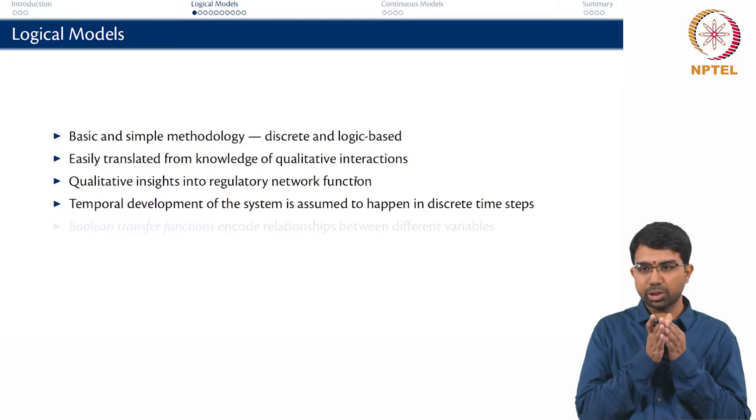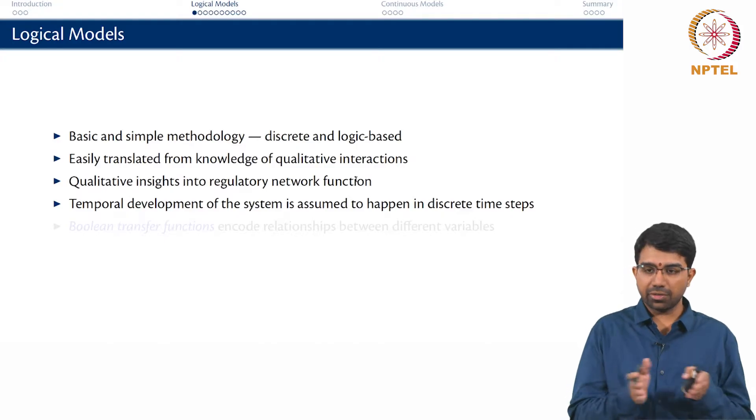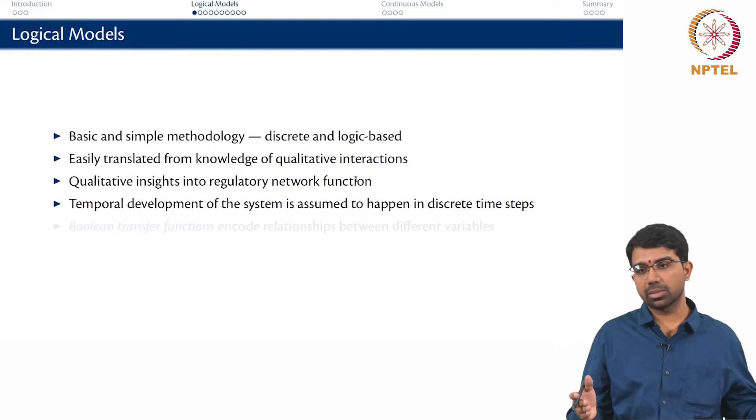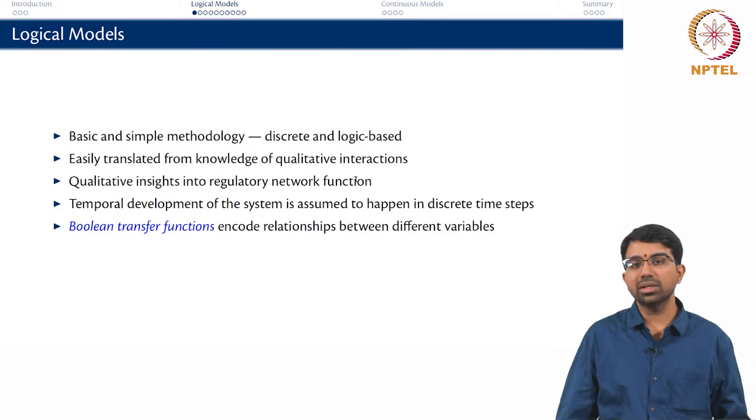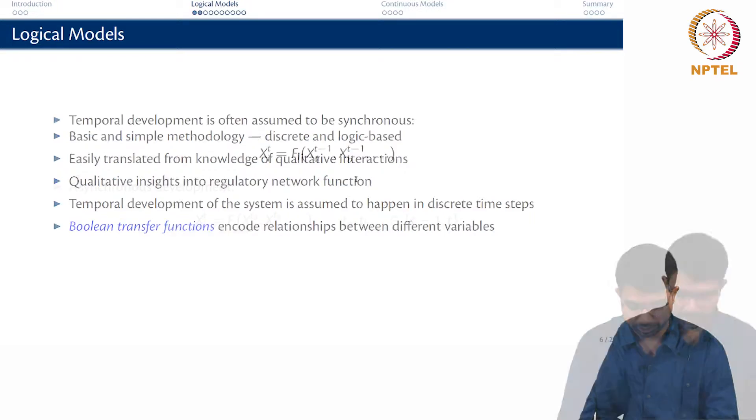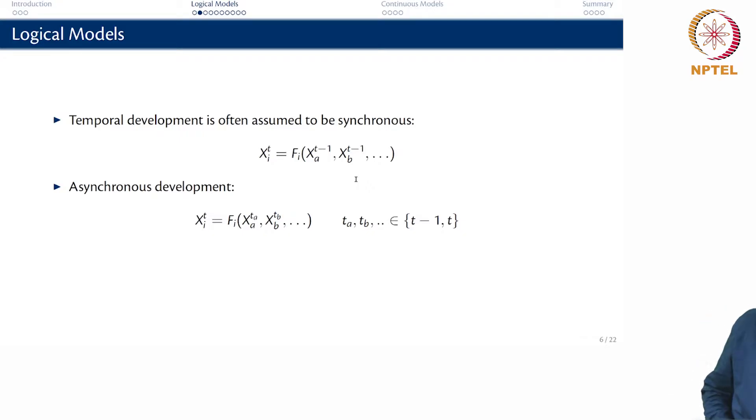So meaning you have a snapshot of the system at t equals 0, then at t equals 1, at t equals 2 and so on and you can make a relationship between how the state of the system at t equals 1 or 2 depends on the state of the system at t equals 0 or 1 and so forth. There are what are known as Boolean transfer functions that encode relationships between the different variables or the different states. The temporal development is often assumed to be synchronous or asynchronous.